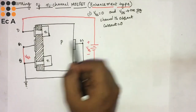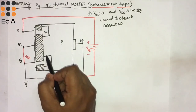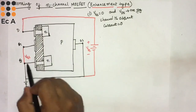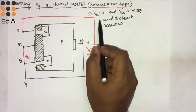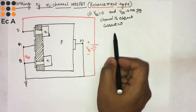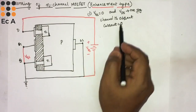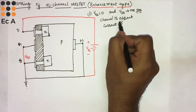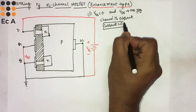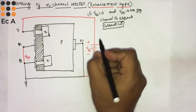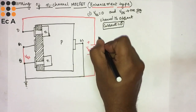Since the channel is absent, no current flows — the current will be equal to 0. Even though we are making VDS positive, the current will be 0. This is very important to remember.